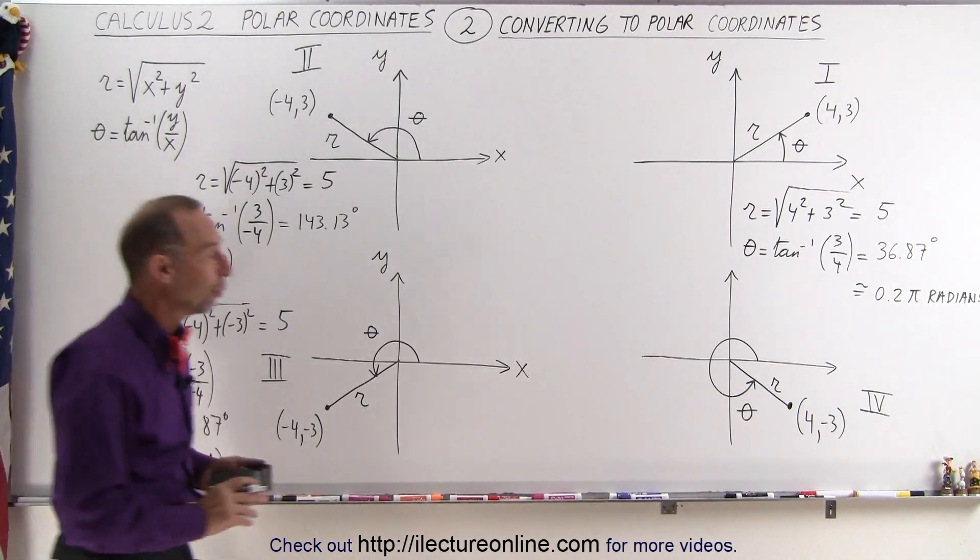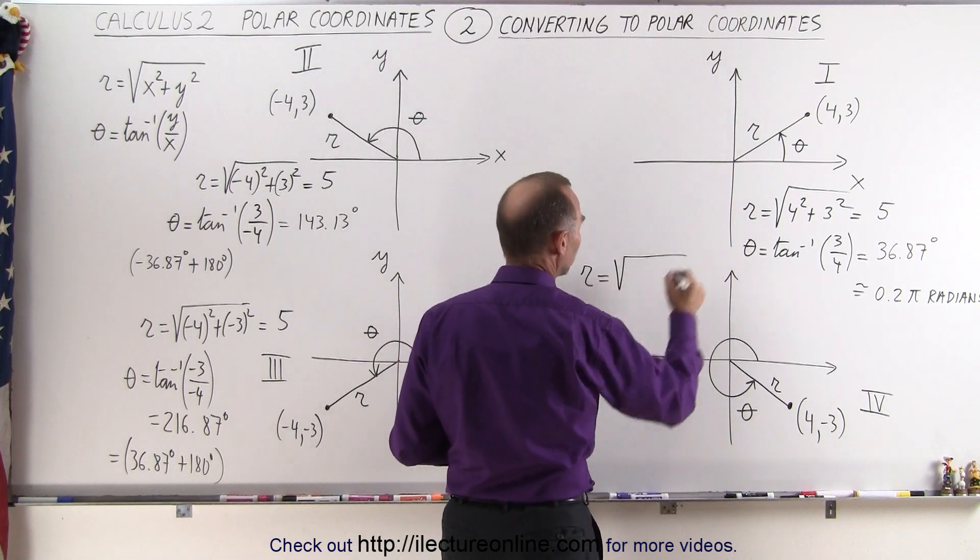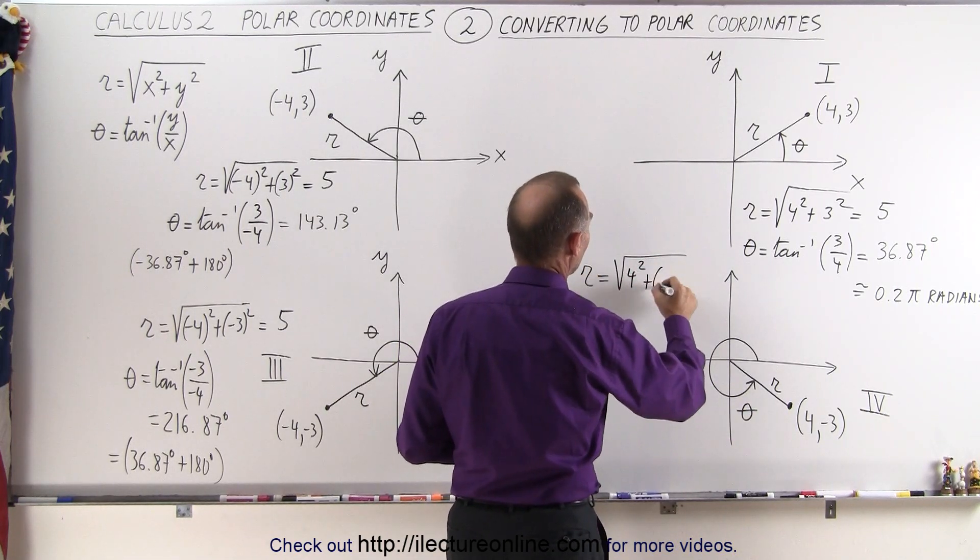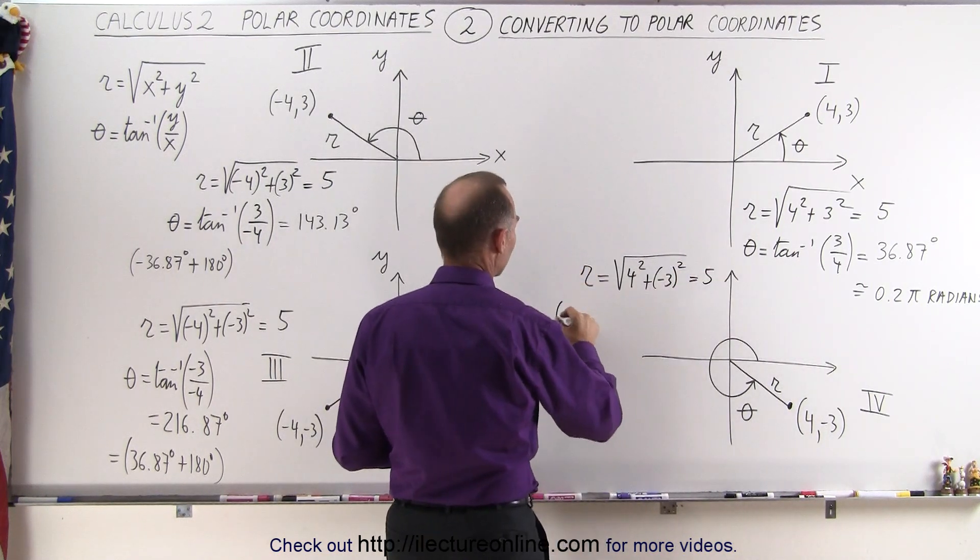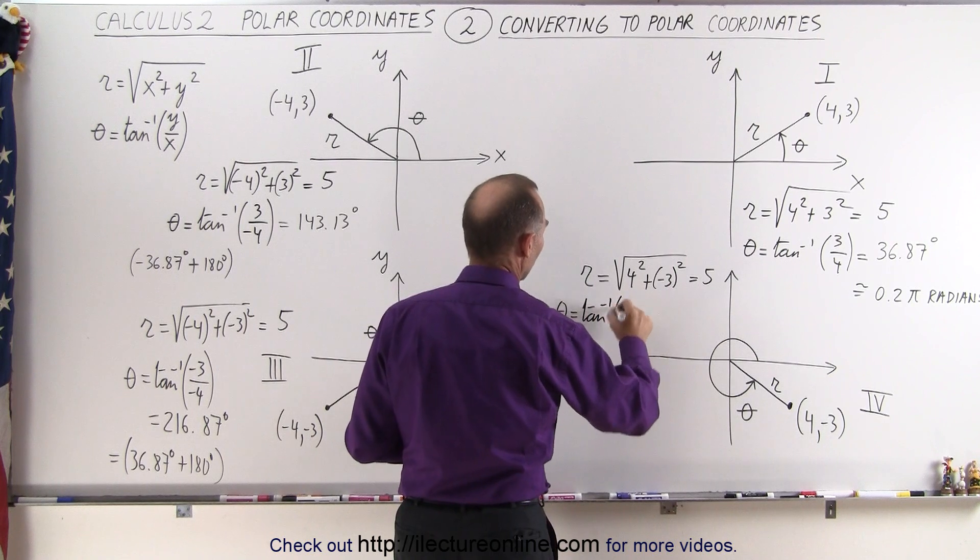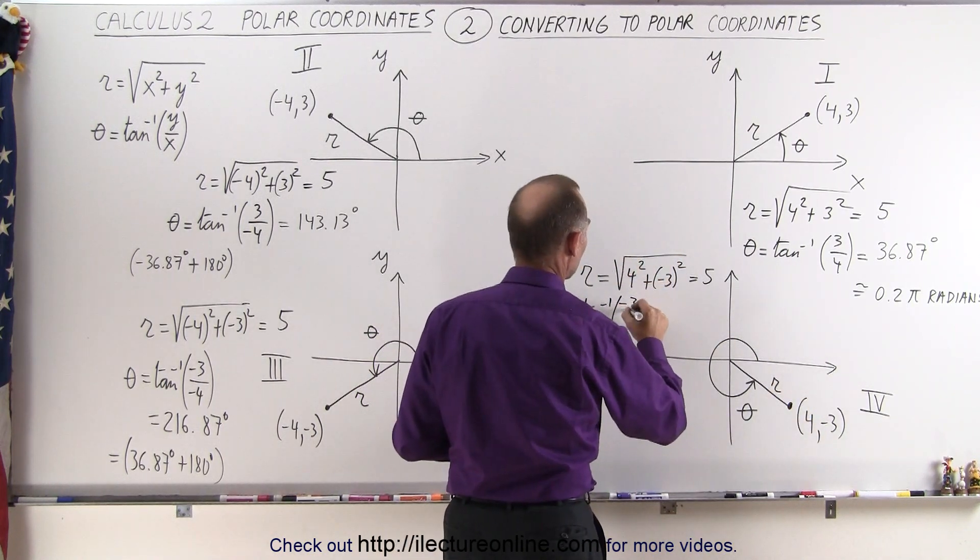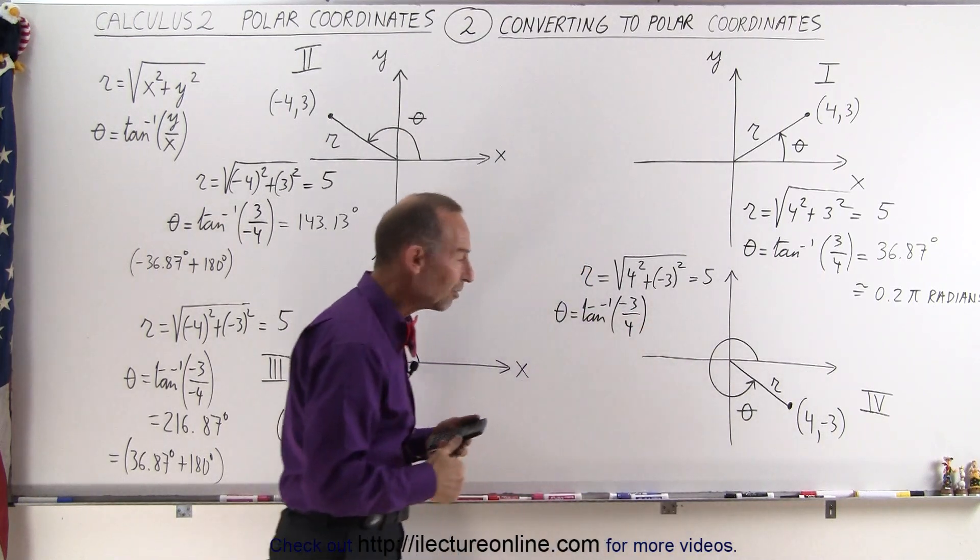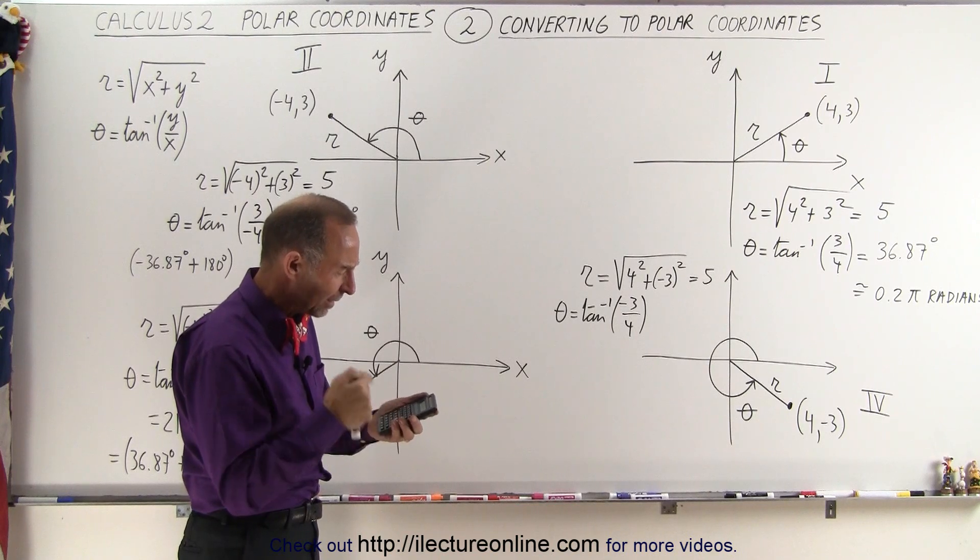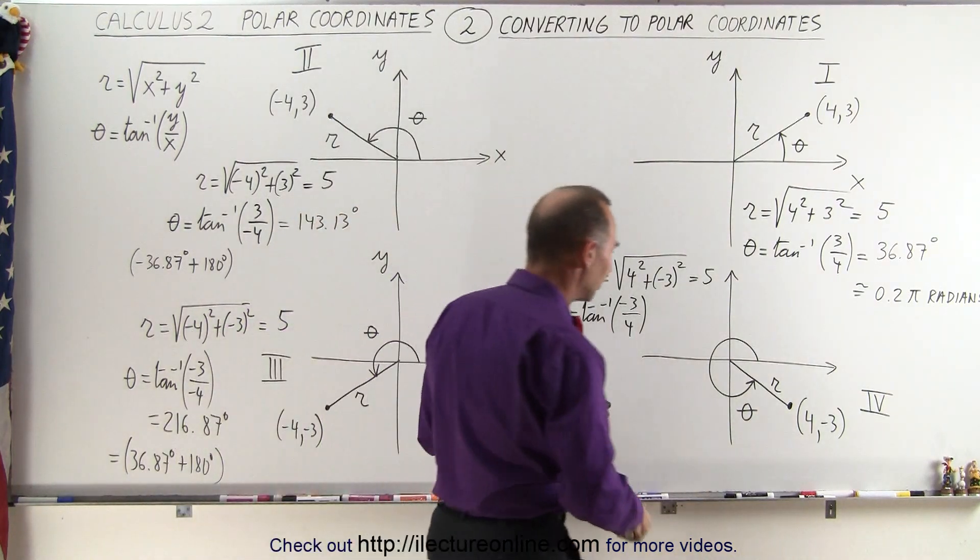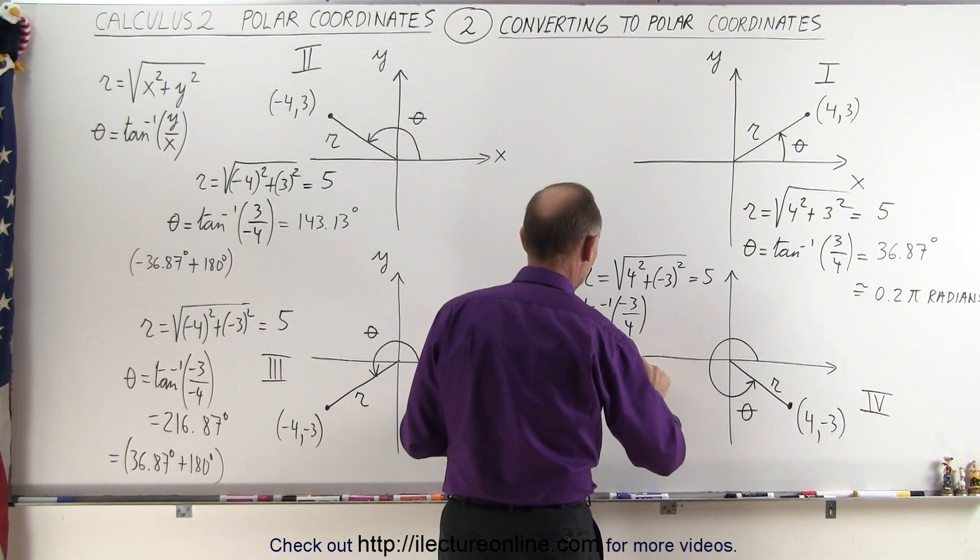And now we'll come to quadrant 4. Again, the distance r is going to be equal to the square root of 4 squared plus a minus 3 squared, which again is equal to 5. And the angle theta is equal to the inverse tangent of y over x. y is going to be a minus 3, x is 4. That gives us the inverse tangent of a minus 0.75. When we do that, again, we get a minus 36.86 degrees.